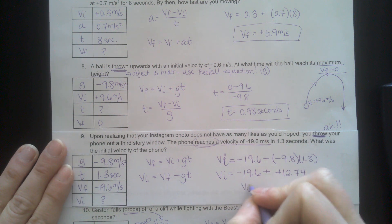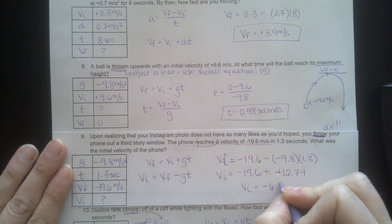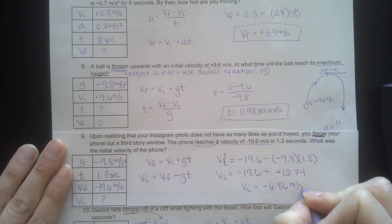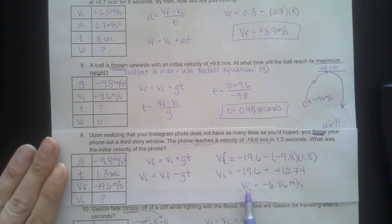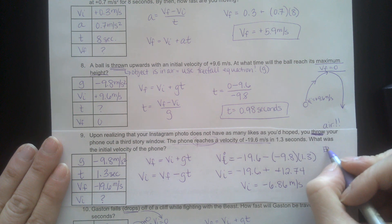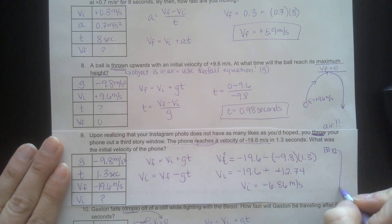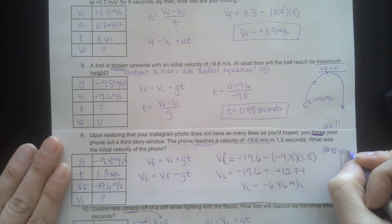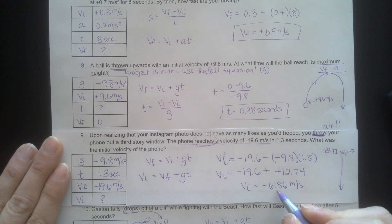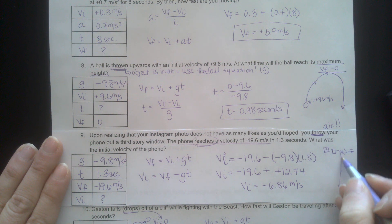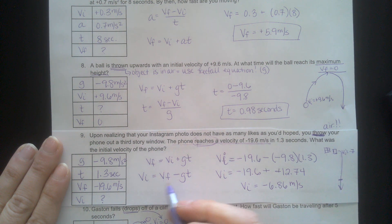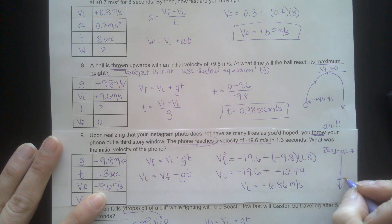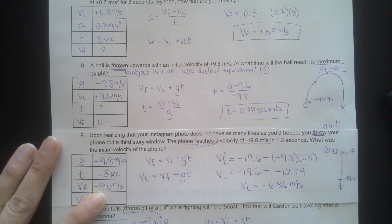Now I have to do negative 19.6 minus negative 12.74. So that ends up being plus a positive. My final answer is negative 6.86 meters per second. It makes sense that the velocity is negative. When you throw the phone out the window, it's moving downwards. The velocity here is about negative 6.86, and then after 1.3 seconds, it's sped up to negative 19.6. So that answer makes sense.